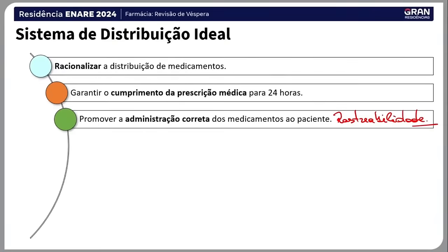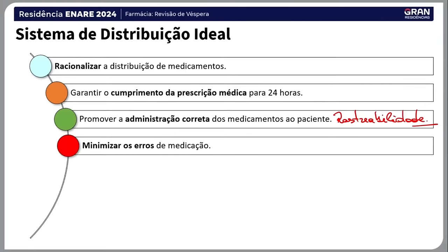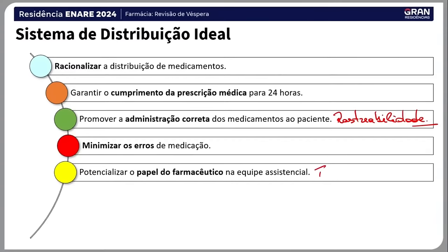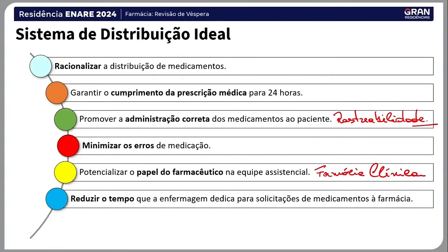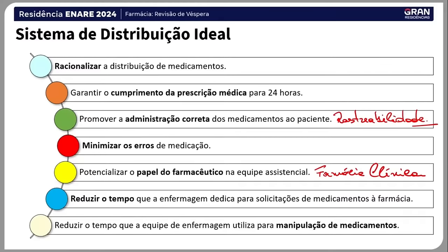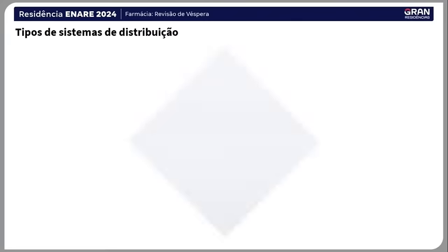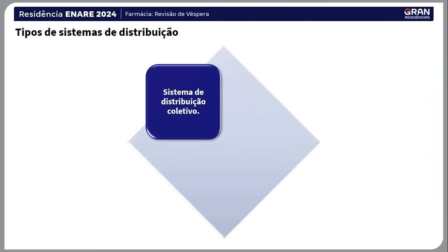Ainda falando do sistema ideal: minimizar os erros de medicação, potencializar o papel do farmacêutico na equipe assistencial — e aqui a gente fala de farmácia clínica —, reduzir o tempo que a enfermagem dedica para a solicitação dos medicamentos à farmácia e reduzir o tempo de manipulação. O melhor sistema para essa situação seria o de dose unitária ou unitarizada.